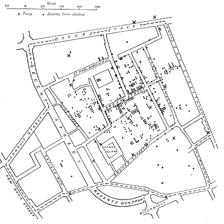Geospatial analysis goes beyond 2D and 3D mapping operations and spatial statistics. It includes surface analysis — in particular analyzing the properties of physical surfaces, such as gradient, aspect and visibility, and analyzing surface-like data. It also includes network analysis — examining the properties of natural and manmade networks in order to understand the behavior of flows within and around such networks, and locational analysis.